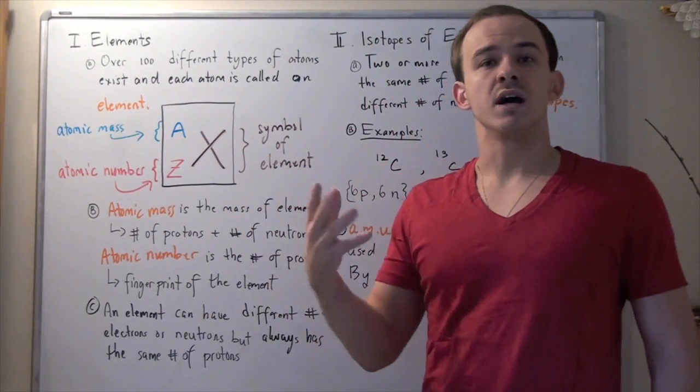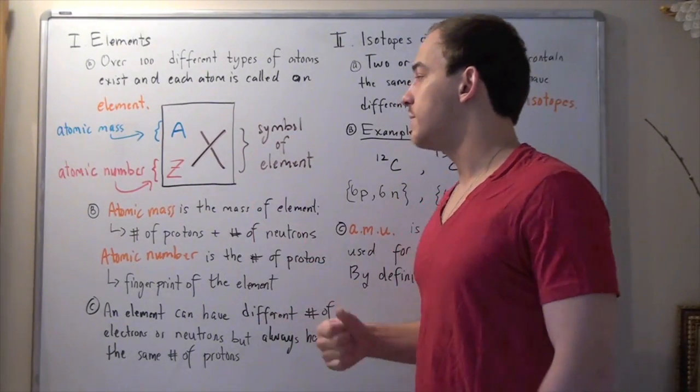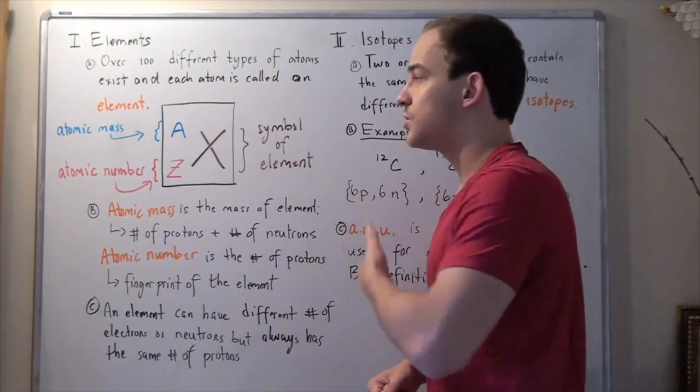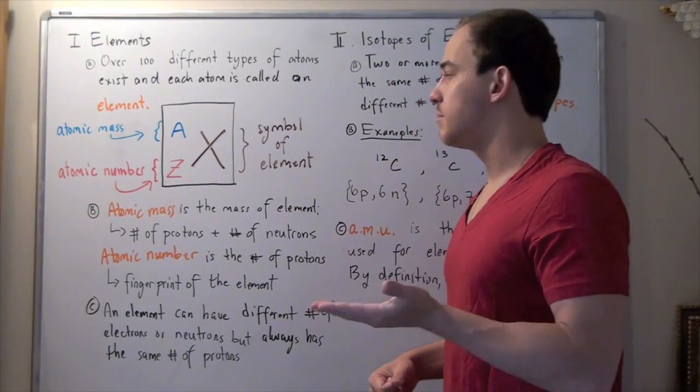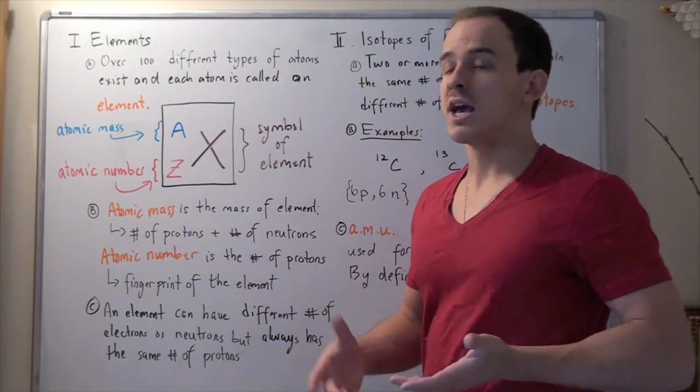Each element found on the periodic table of elements is represented in the following way, where this X is the symbol of our atom. In this case, it's just X, a hypothetical symbol. But for example, carbon has the letter C and oxygen has the letter O.